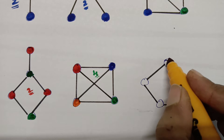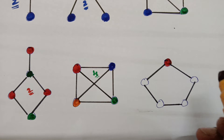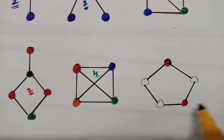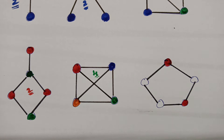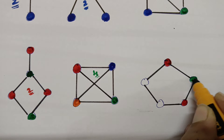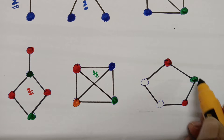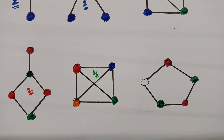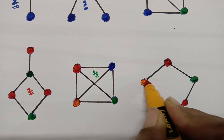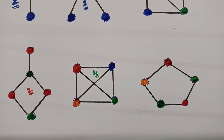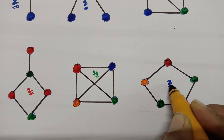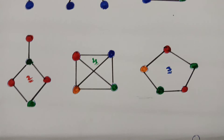For this graph, I start with red at the top, leaving adjacent vertices uncolored red. I then use green, skipping its adjacent vertices. Where neither red nor green can be reused, I select a third color. I used three colors total, so the chromatic number of this graph is three.